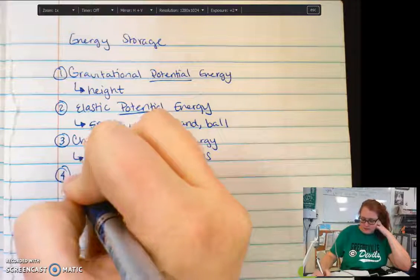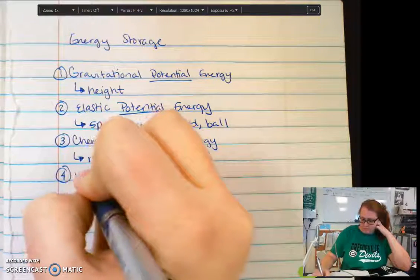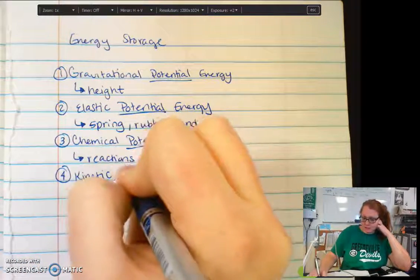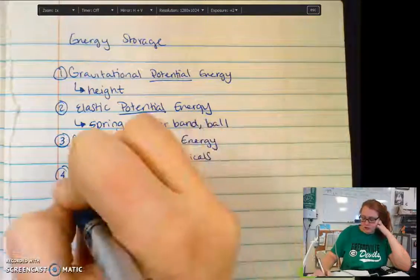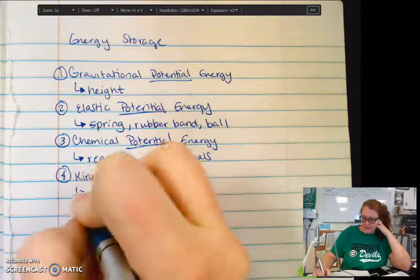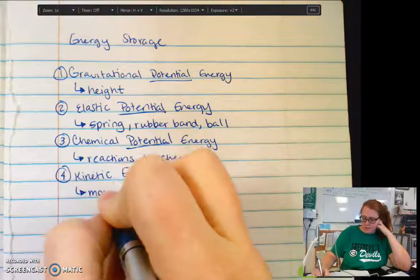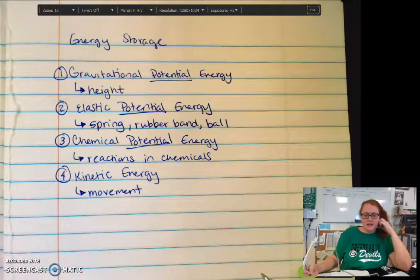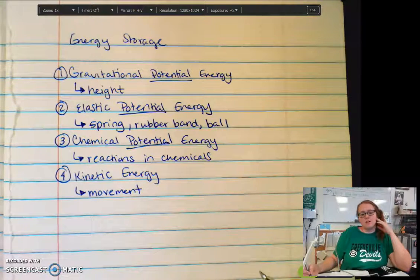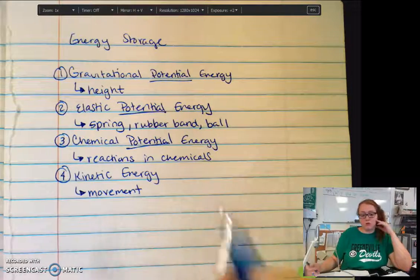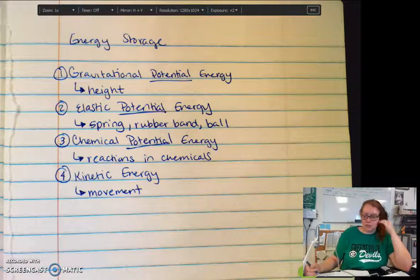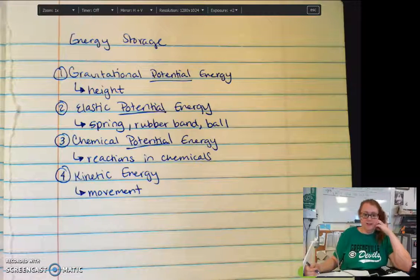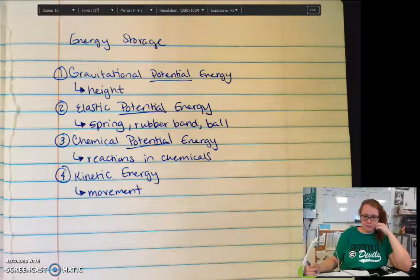And the fourth storage mechanism for energy is kinetic energy. In physical science, we talked about the kinetic energy of molecules, the movement of molecules. Here in physics, we talk about big things. We don't look at a very small scale. So it's going to be the movement of objects. If your object is moving, it has kinetic energy.